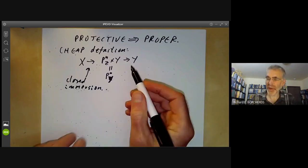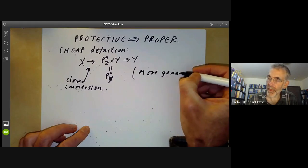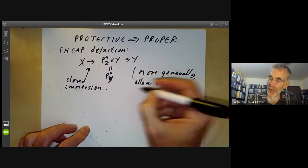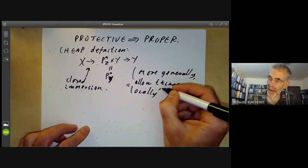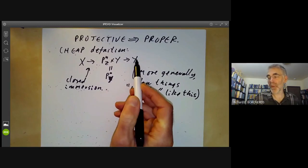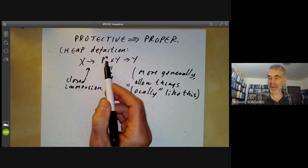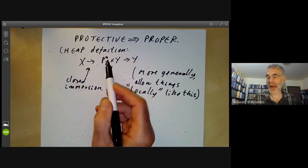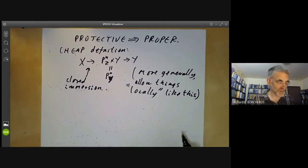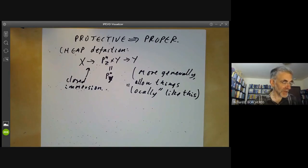Now, this isn't actually the most general form of projective map. So more generally, we should allow things that are locally like this. And in other words, Y should have a cover by open affine subsets, on each of those it should look like this. So instead of having a map from projective space times Y to Y, we have a map from some sort of twisted bundle over Y to Y. But we won't worry about that because this is just to illustrate the criterion for being proper.